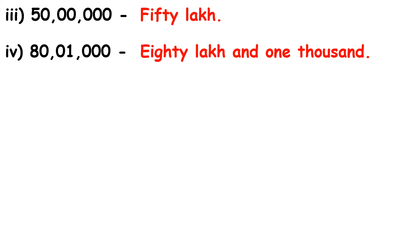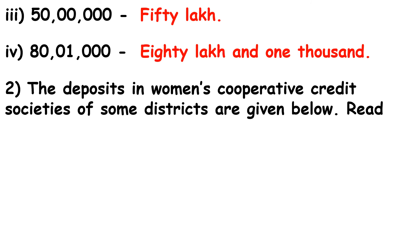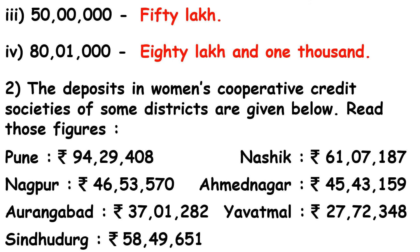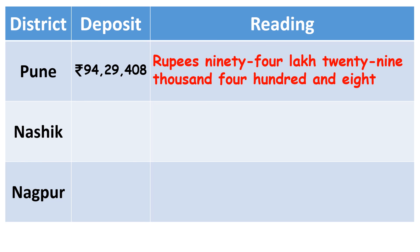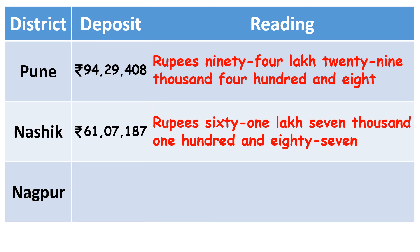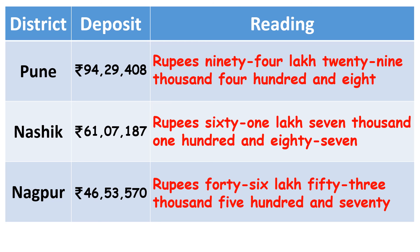Let us solve the second sum. The deposits in the women's cooperative credit societies of some districts are given below — read those figures. The figures are: Pune, Rs. 94,29,408; Nasik, Rs. 61,07,187; and Nagpur, Rs. 46,53,570. We will write these figures in words and read them. Similarly, we will also write for the remaining ones.